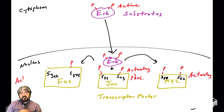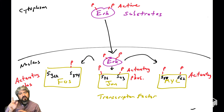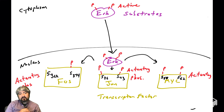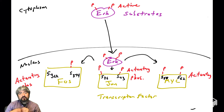Another transcription factor is FOS, sometimes known as c-FOS. I've drawn ERK phosphorylating one serine at position 374, and again this is an activating phosphorylation on FOS. FOS is a transcription factor, and this phosphorylation will help activate FOS.